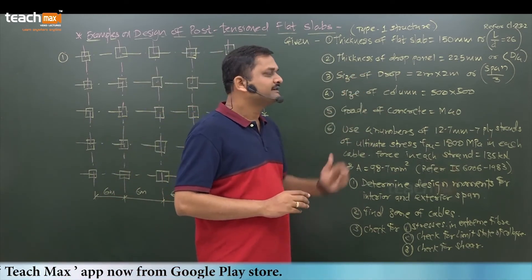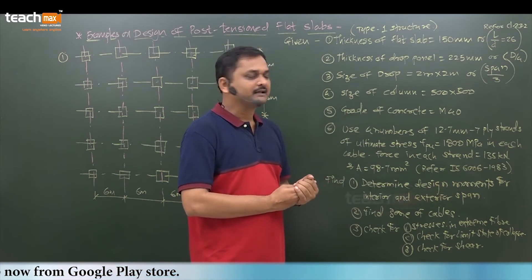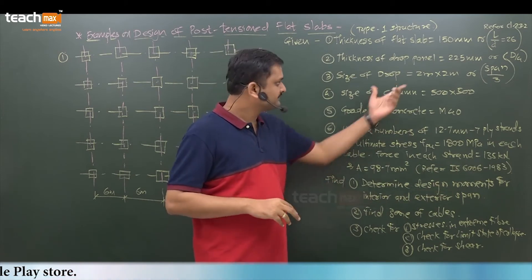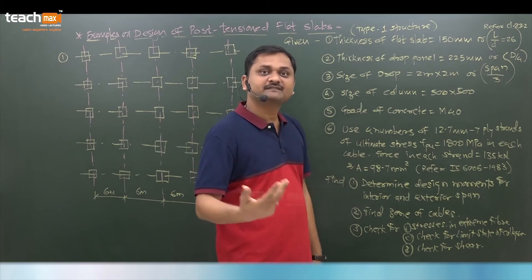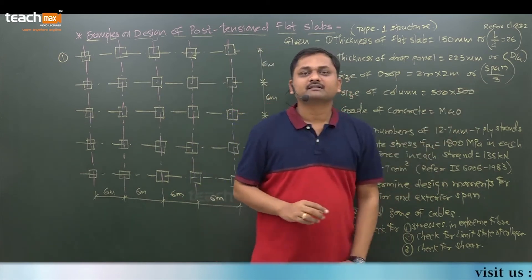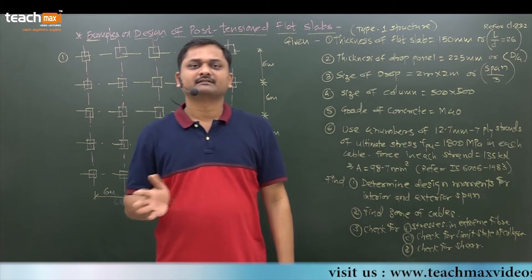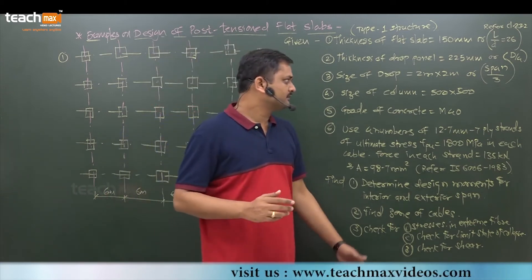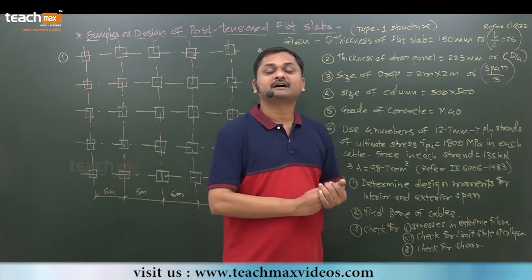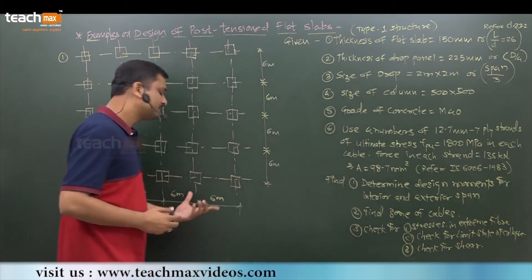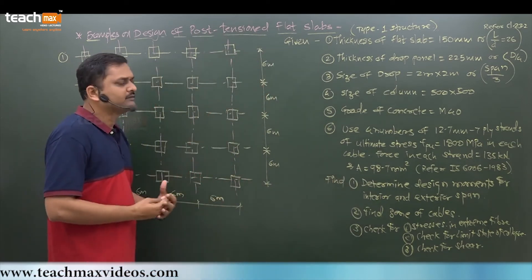Next, size of the drop. Here it is given 2 meter by 2 meter. If not given, you can assume as span by 3. You can take this criteria: span by 3, where span is 6 meter. 6 by 3 equals 2 meter - same values you get.